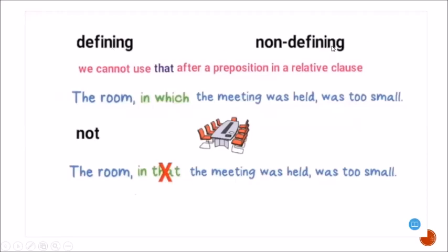An important rule: we cannot use 'that' after a preposition in a relative clause. We must use 'which' for things or 'whom' for people. For example: 'The room in which the meeting was held was too small' is correct. 'The room in that the meeting was held was too small' is NOT possible — 'that' cannot follow a preposition.